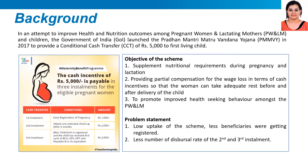A brief about the scheme: in an attempt to improve the health and nutritional outcomes among pregnant and lactating mothers and children and encourage healthy pregnancy, the Government of India launched the Pradhan Mantri Matru Vandana Yojana in January 2017 to provide a conditional cash transfer of Rs 5,000 to the first living child. The scheme was implemented from September 2017 onwards.